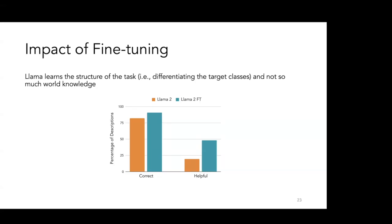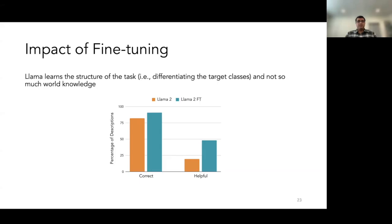To summarize part one: we propose Follow-up Differential Descriptions, a zero-shot approach that adapts class descriptions to the target classes to improve performance. We demonstrate superior performance through extensive experiments on 12 fine-grained image classification datasets, study the role of ambiguous classes and differentiating information, and fine-tune publicly available language models like LLaMA-2 to generate differential descriptions, analyzing what changes before and after fine-tuning.